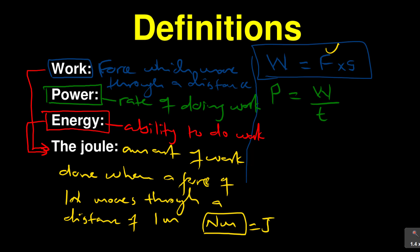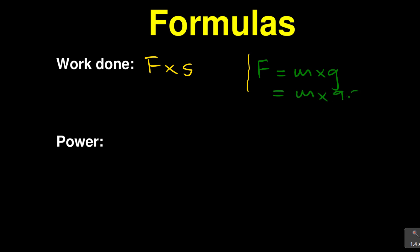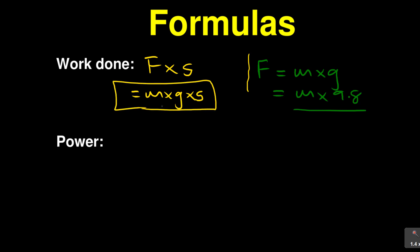Now moving ahead, let's look at the formulas. The formula for work done is force times distance — please don't forget that. It's also important to remember that force is mass times gravity. So when you're given the mass of an object, you multiply that mass by gravity, which is 9.8. So work done equals M times G times S.